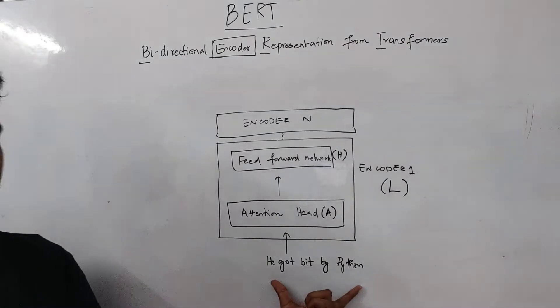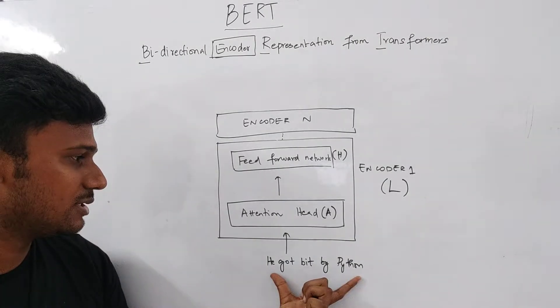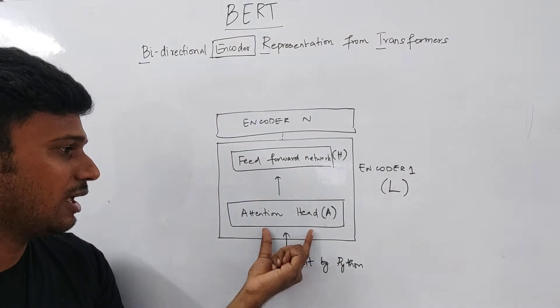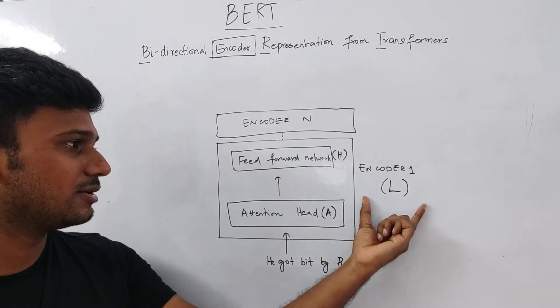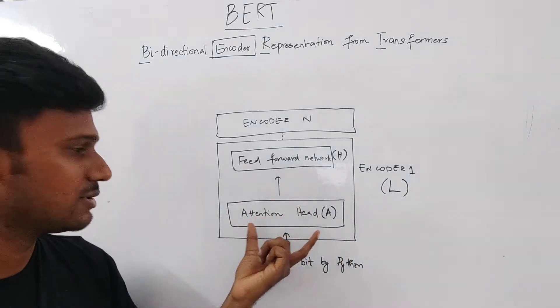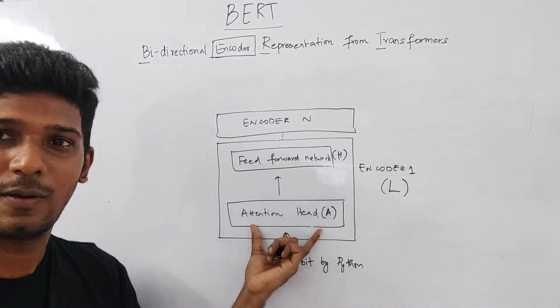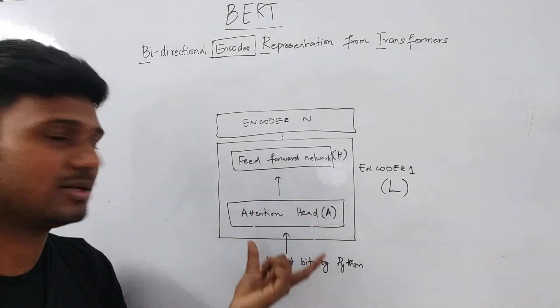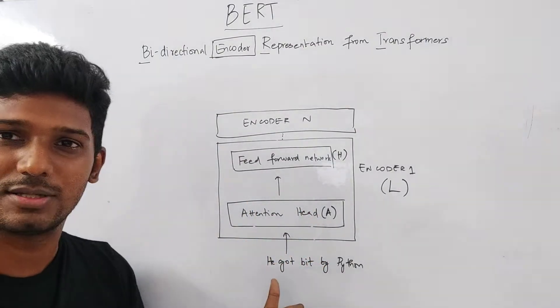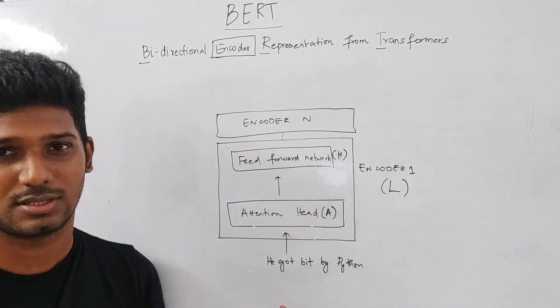Now we know that we have some input sentence over here. So this input sentence is now sent into the attention head and inside a single encoder, there can be multiple attention heads. So in this case, I have just drawn only one attention head, but in certain cases, there can be 10 attention heads, there can be 12 attention heads or there can even be 24 attention heads.